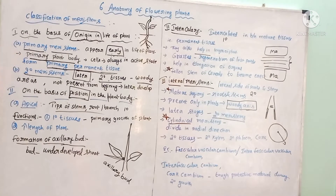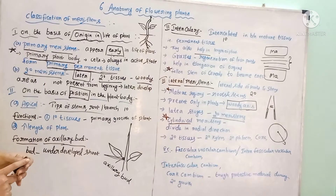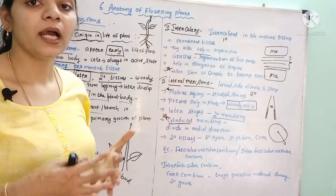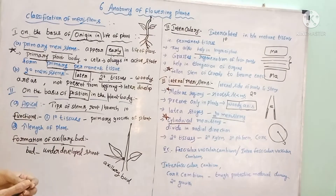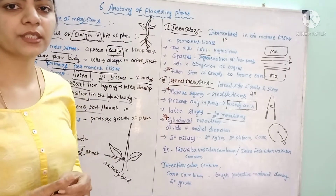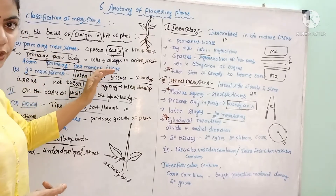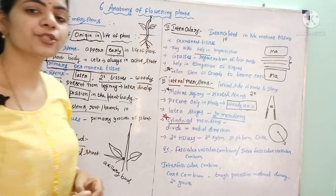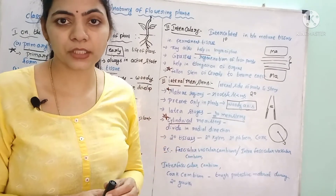The primary meristem is responsible for the development of the primary plant body such as roots, stems, leaves, and branches. The cells present in the primary meristem are always in an actively dividing stage, increasing the plant body and developing all parts of the plant. After dividing for several stages, the cells present in the primary meristem are converted into primary permanent tissue, where the cells stop dividing and lose the capability of dividing.